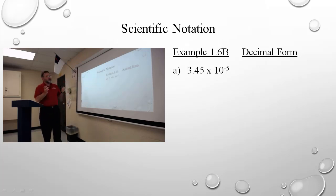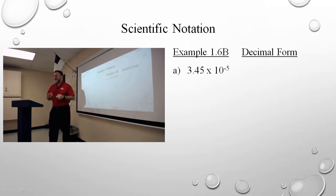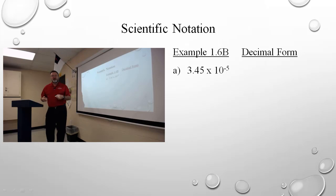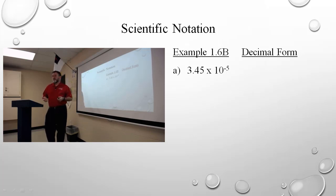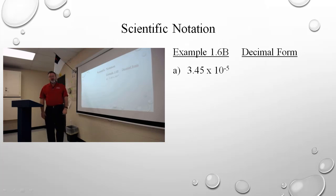So right now: 3.45 times ten to the negative fifth. What are we going to have to do to write that in decimal form? First thing I do is write down all the digits — three, four, five — they're all significant. So write them down because they're all going to be significant. They all have to be in your answer. Now I have to move the decimal point.